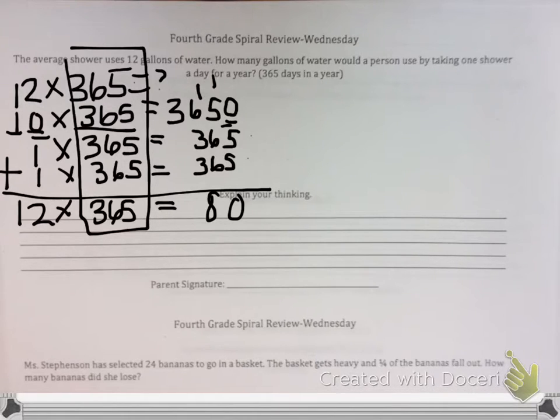And then my 6 and 3 is 9, plus 1 is 10, plus 3 is 13. Carry my 3. Let me fix this. So I'd add 4. And my answer is 4,380.